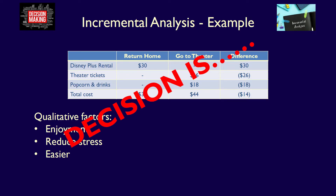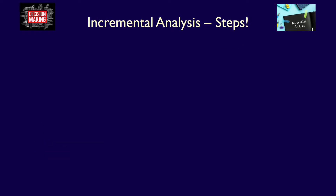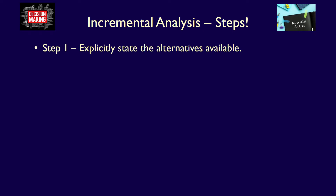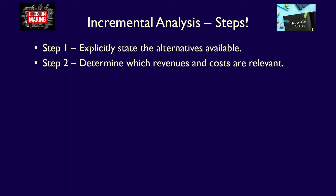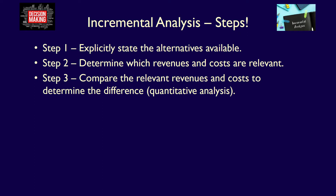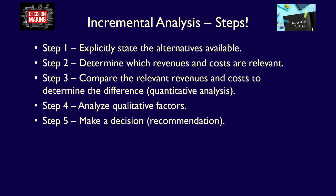Step 5 of incremental analysis is to make a decision. To summarize: Step 1 is to explicitly state the available alternatives. Step 2 is to determine which revenues and costs are relevant and which are irrelevant. Step 3 is to create a chart comparing relevant revenues and costs for each alternative and calculate the difference — a quantitative analysis. Step 4 is to analyze the non-financial qualitative factors. Step 5 is to make a decision taking into account both the quantitative and qualitative factors.